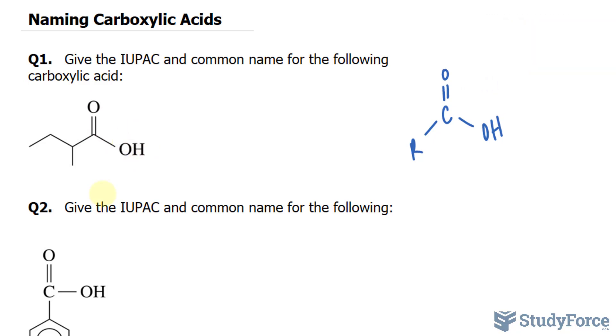Now, when it comes to naming these, you want to locate the longest carbon chain that consists of this functional group. So the longest chain is one, two, three, four. Normally we call that butane if it were an alkane.